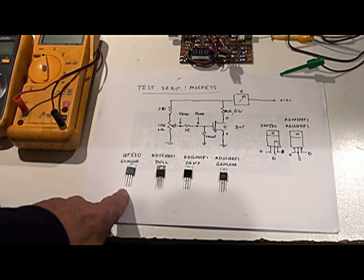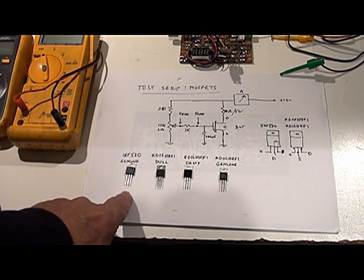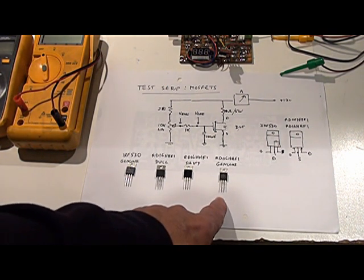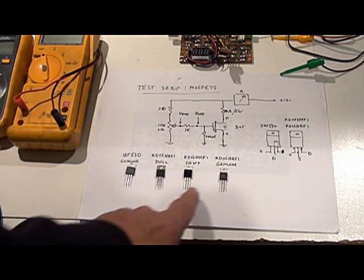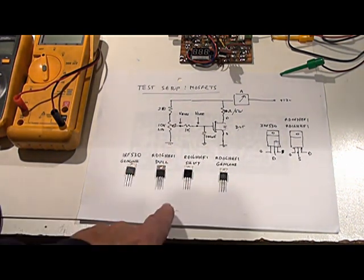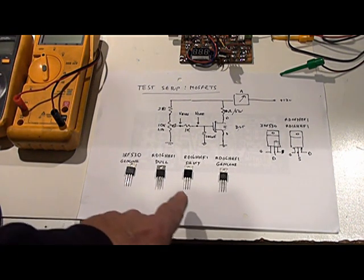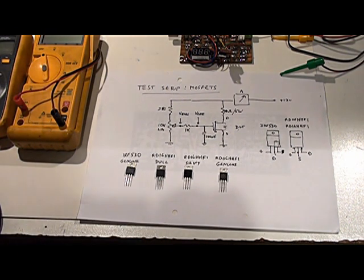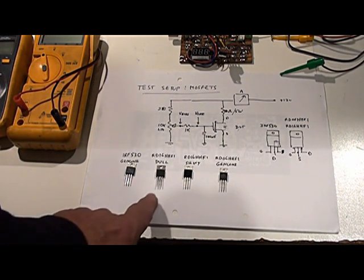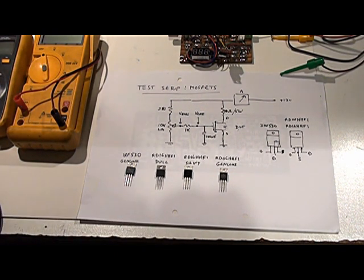The IRF530s I got with the kit failed, so I bought some genuine ones and they worked alright. And I also managed to find some genuine RD06s. I don't have any RD16s that are genuine here because I've used them all in my rig. So I need to buy some more. And I thought before I spend any more money, let's see if I can avoid buying fake ones again.